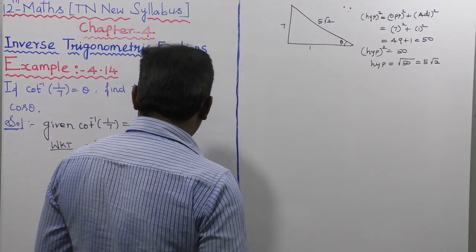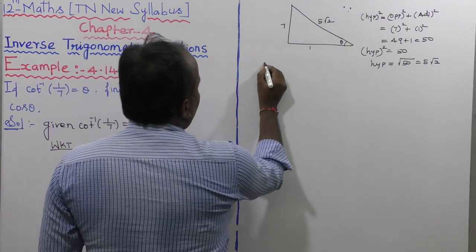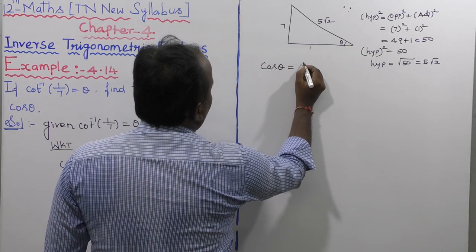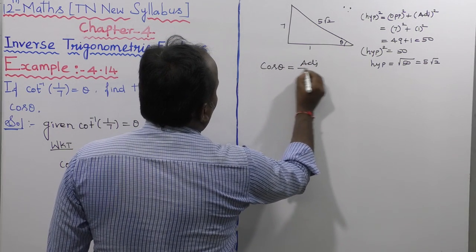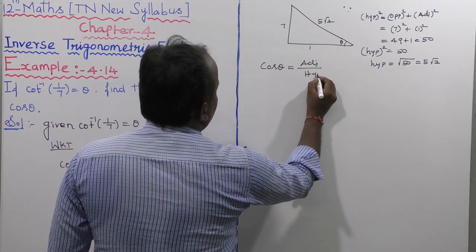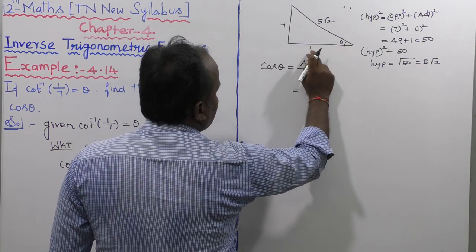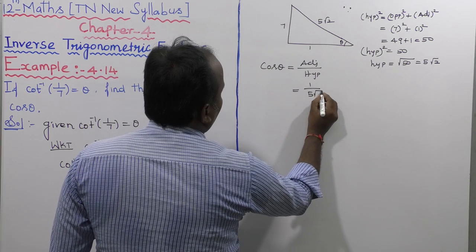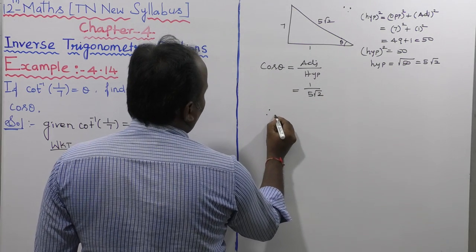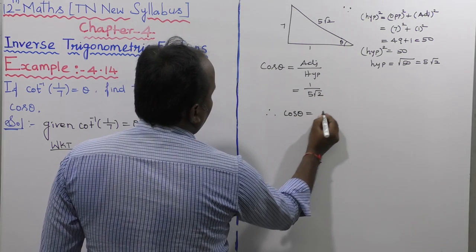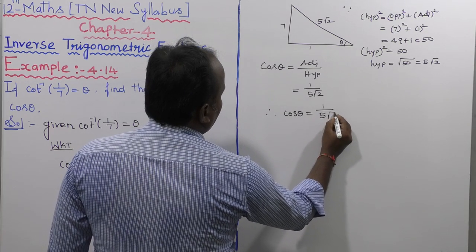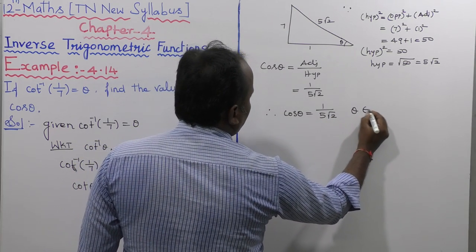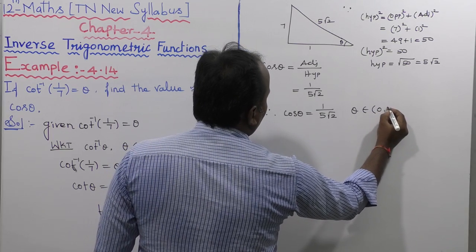Now to find the value of cos theta. The formula is cos theta equals adjacent side divided by hypotenuse. The adjacent side is 1 and the hypotenuse is 5 root 2. Therefore, cos theta is equal to 1 divided by 5 root 2.